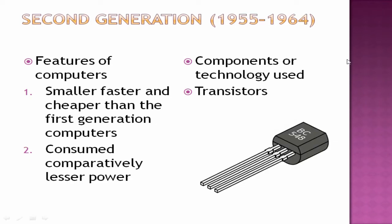The second generation of computers lasted from 1955 to 1964. These computers were smaller, faster, and cheaper than the first generation. They also consumed less power than the previous generation. The technology used in this generation was transistors.